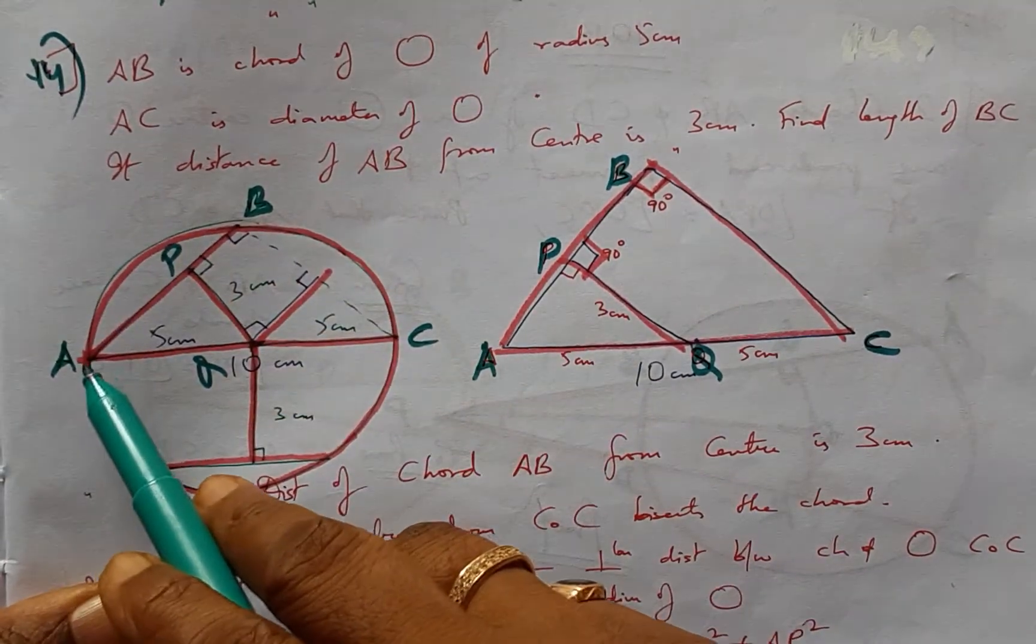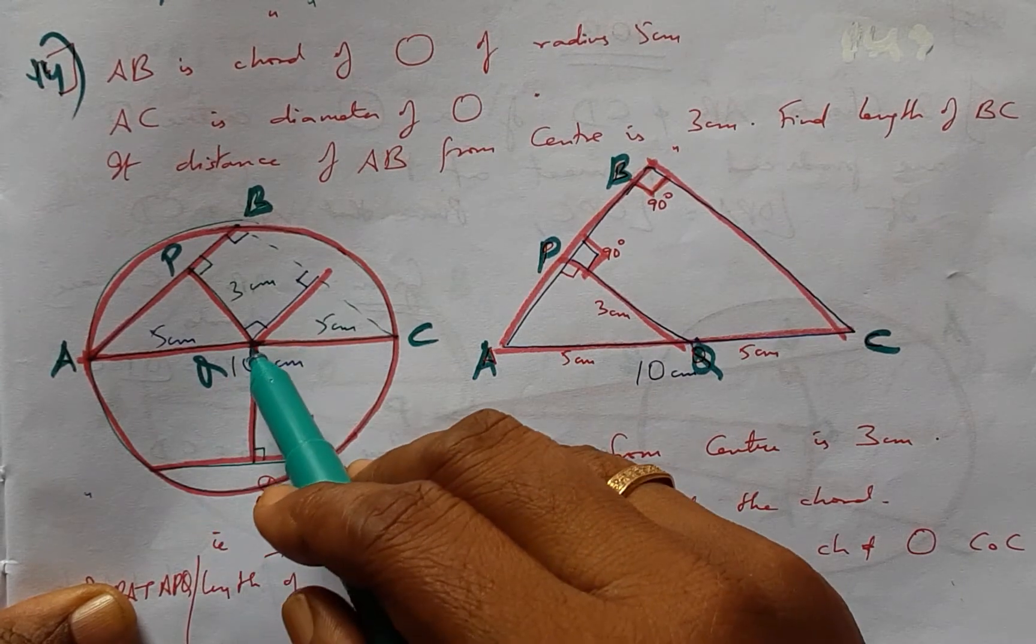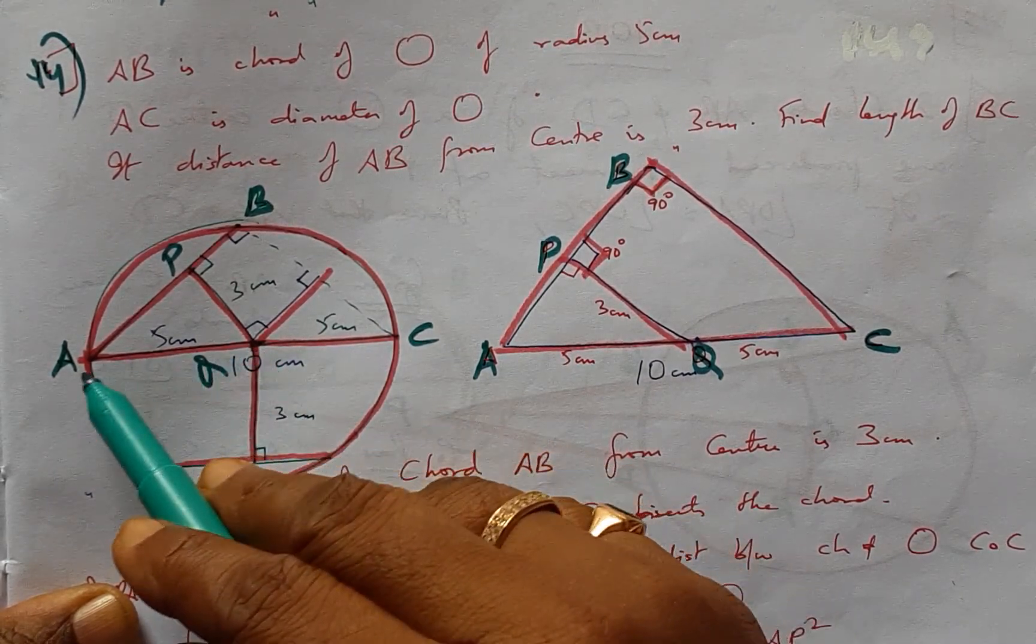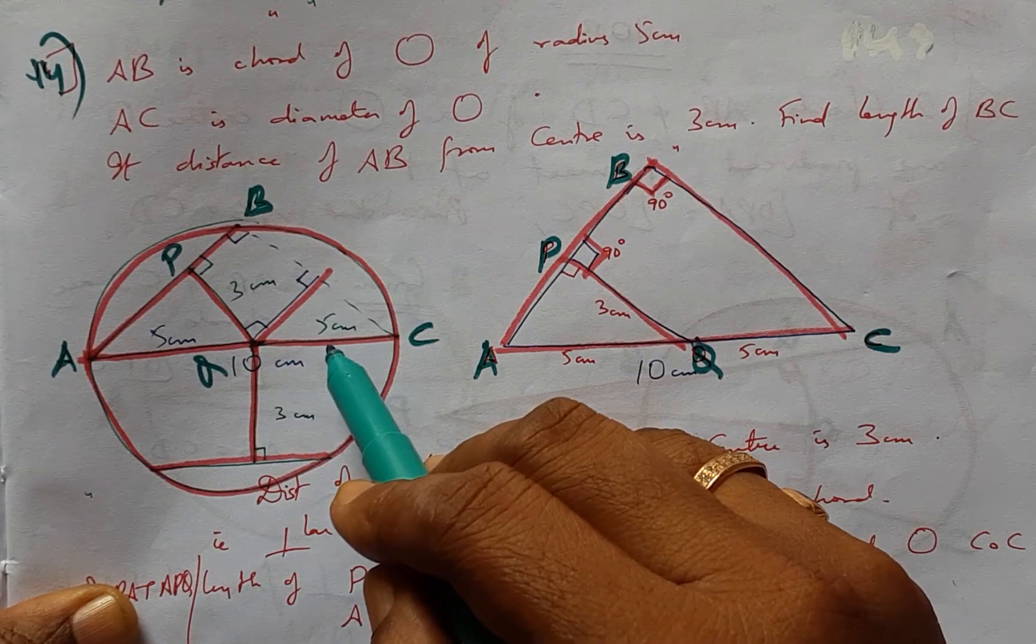Question number 14. AB is a chord of a circle with radius 5 cm. The circle radius is 5, so AQ is 5 cm and QC is also 5 cm.